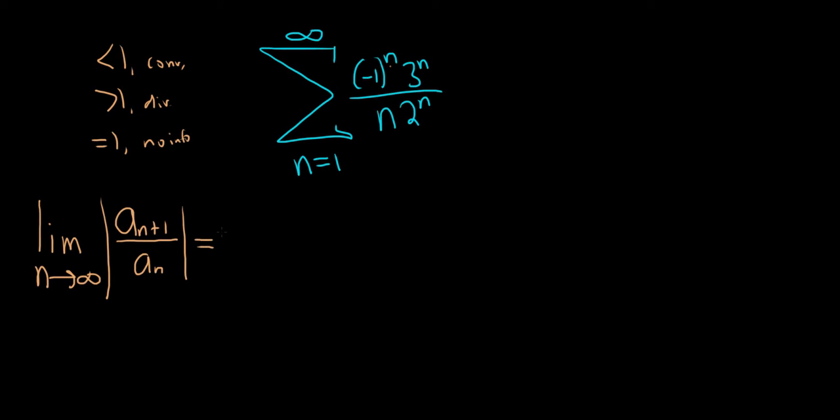Okay, let's go ahead and work through this. So this is the limit as n approaches infinity of the absolute value of... So let's go ahead and replace all of the n's with n plus 1's. So it'll be negative 1 to the n plus 1, 3 to the n plus 1. Then on the bottom, we have n plus 1. And we also have 2 to the n plus 1.